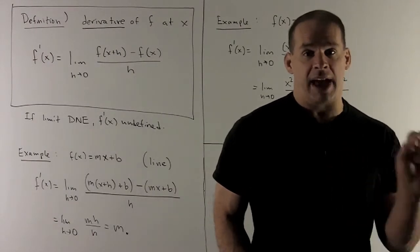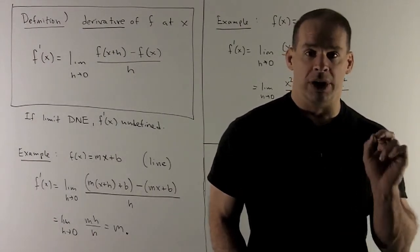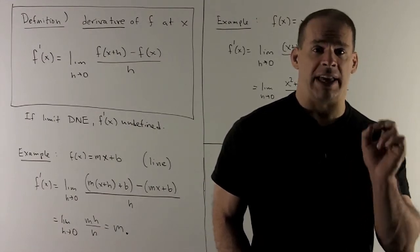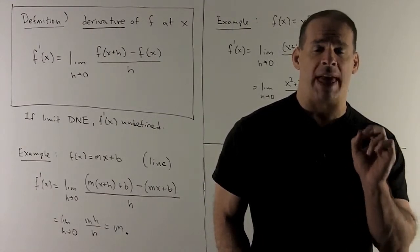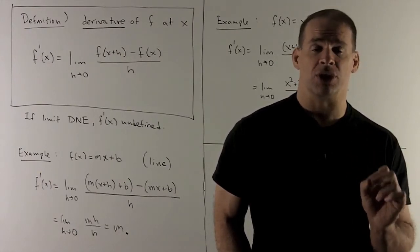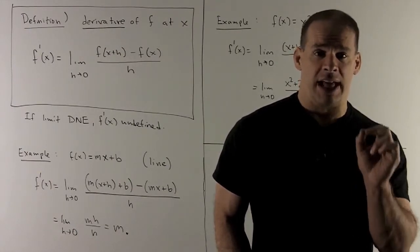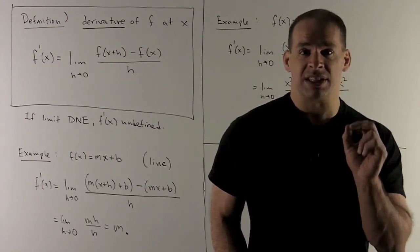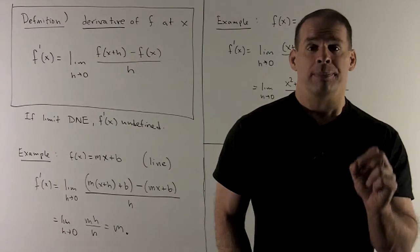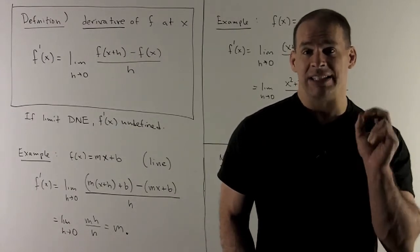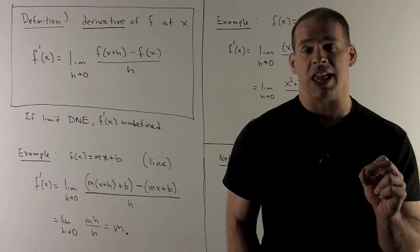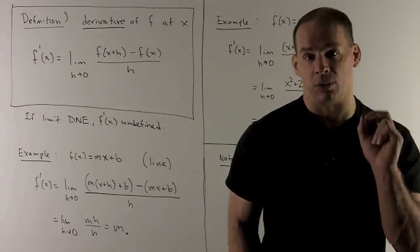When I expand and collapse, the only thing left over will be mh. So if I take mh over h, I'm just going to be left with m. Taking the limit of a constant is just that constant m, and that's our answer. What does this say? If I have a straight line with slope m, the best-fitting tangent line is the line itself, so the slope of the tangent line equals the slope of the original line.